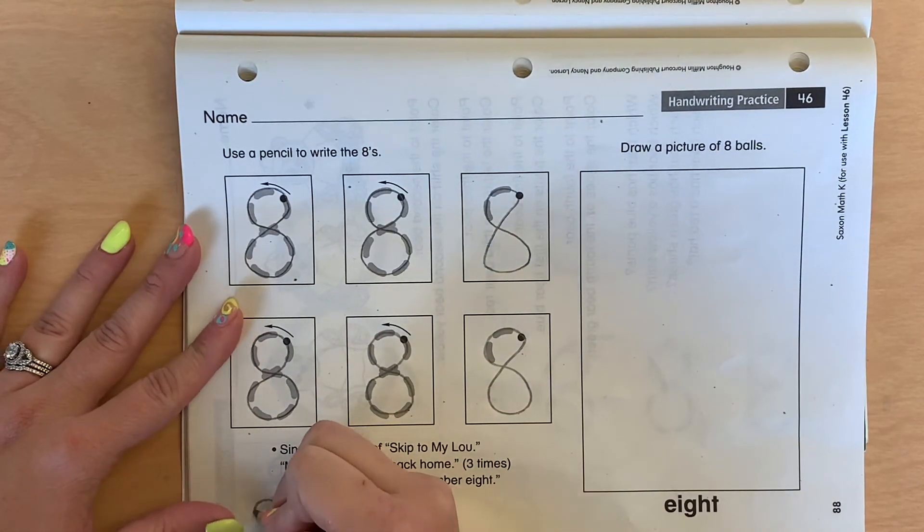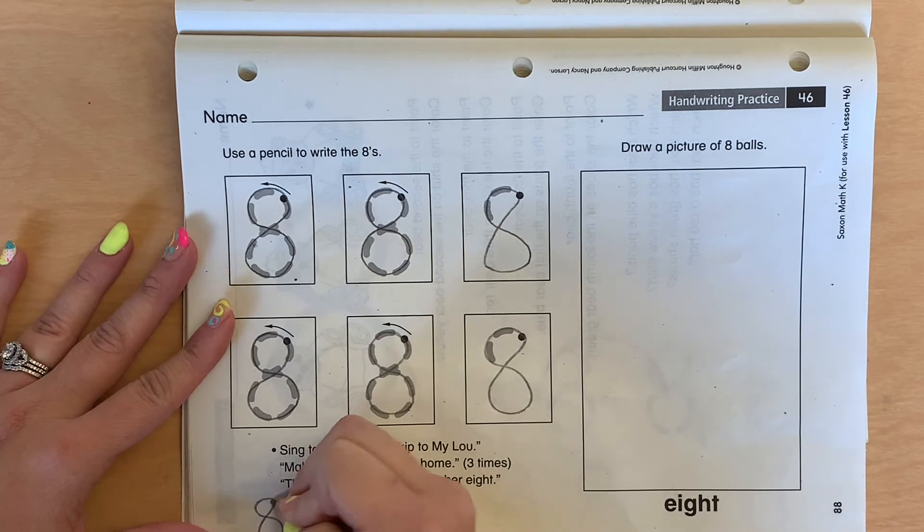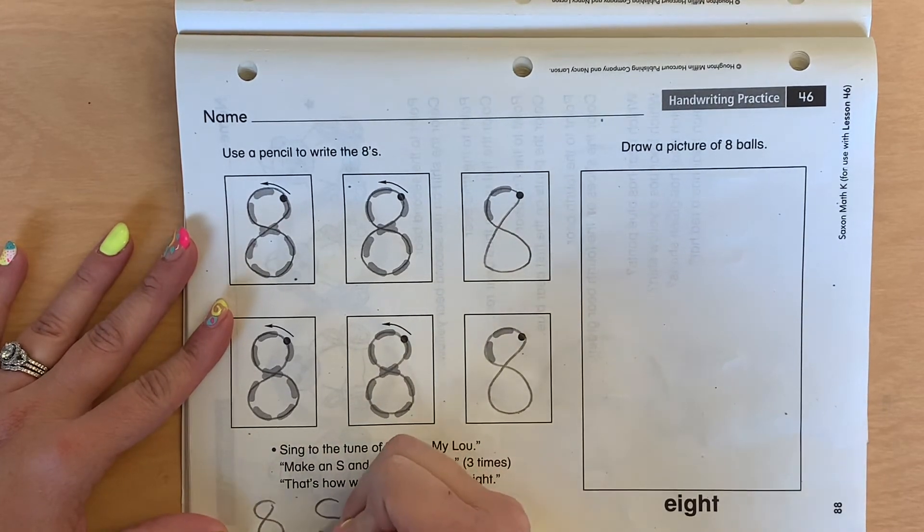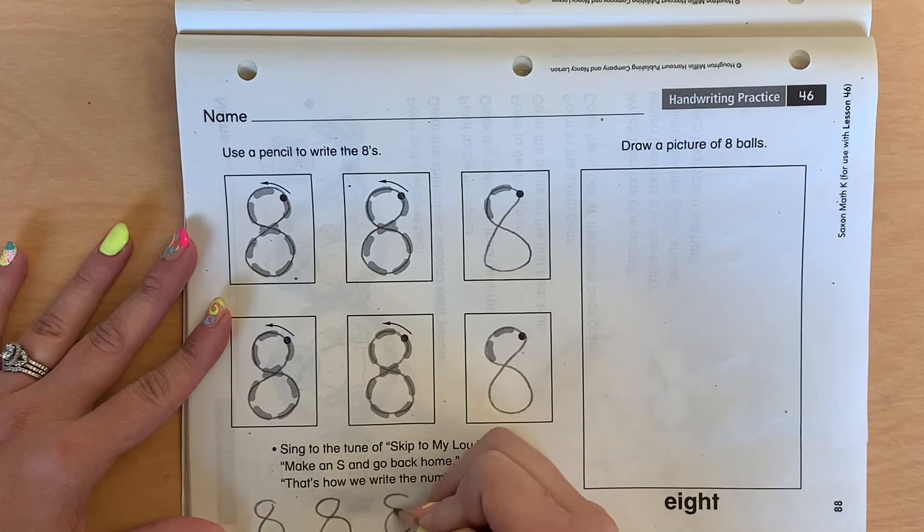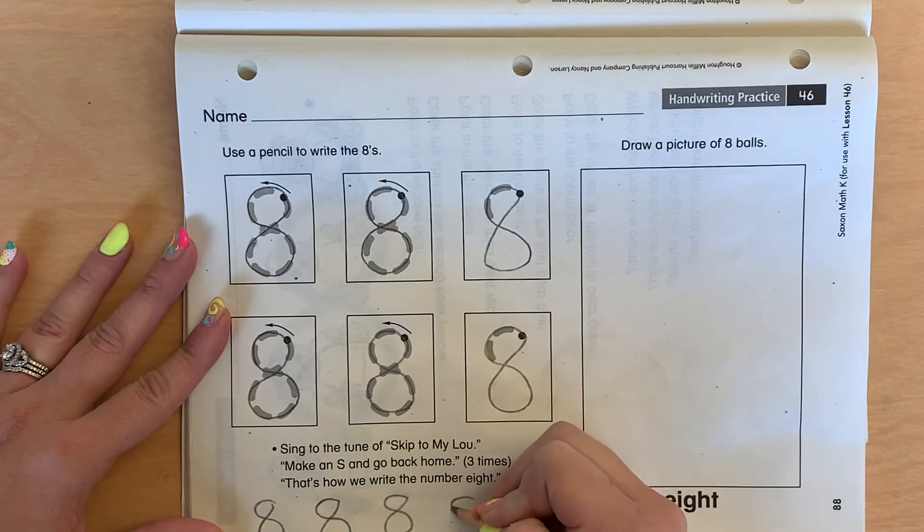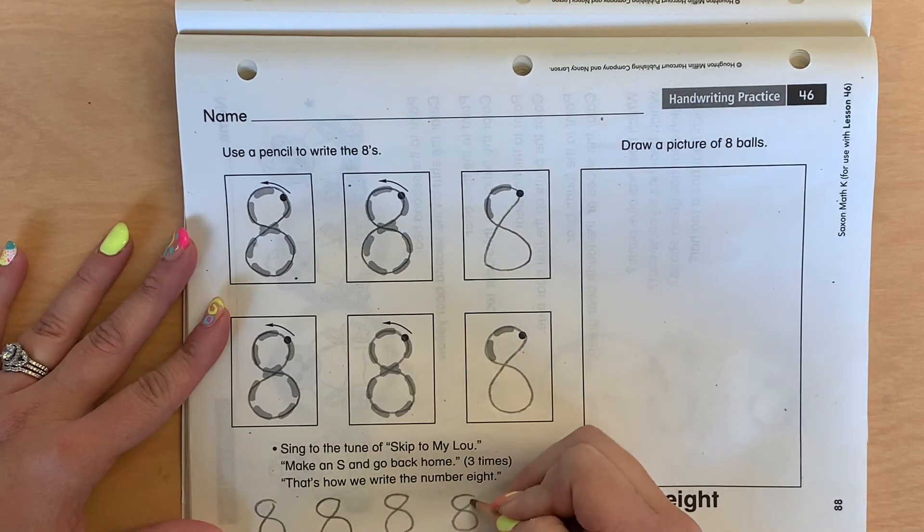Try some at the bottom if it's still tricky for you. So make an s and go back home. Make an s and go back home. Make an s and go back home.